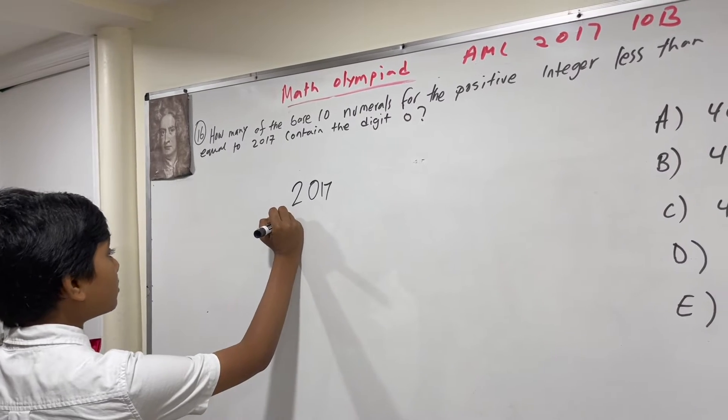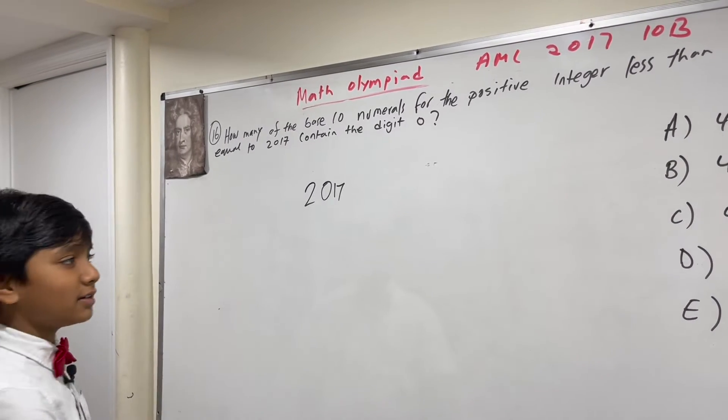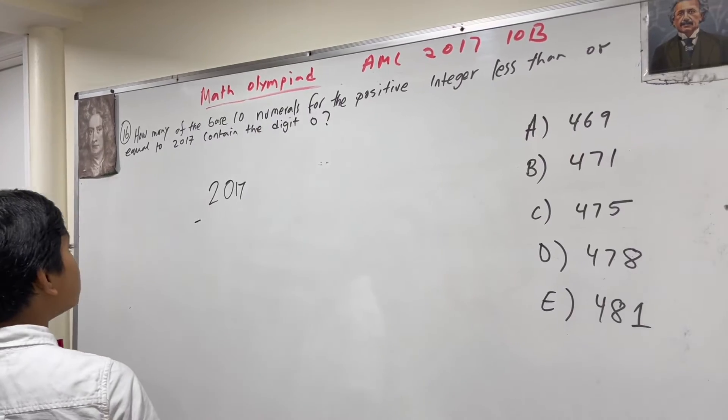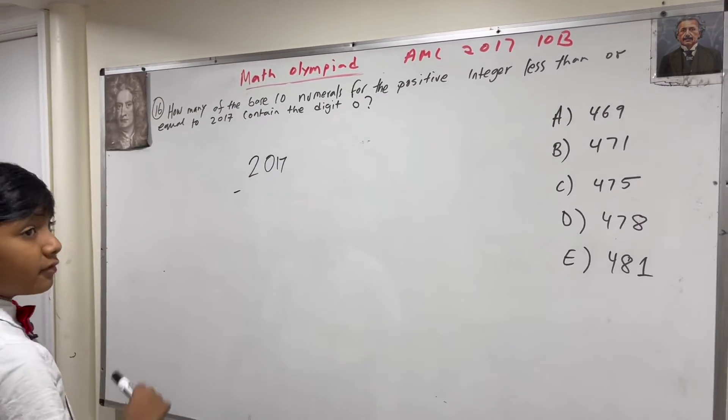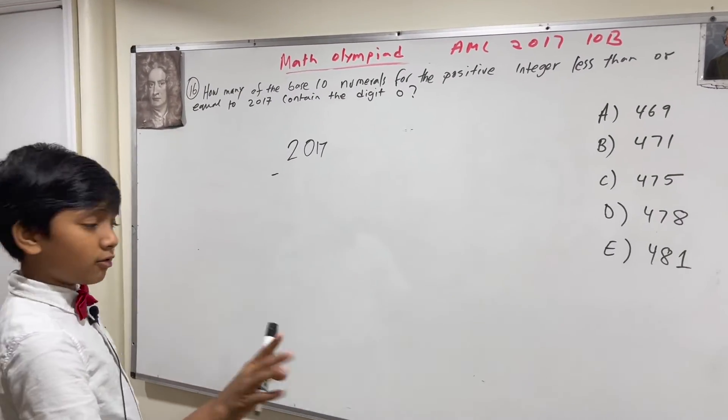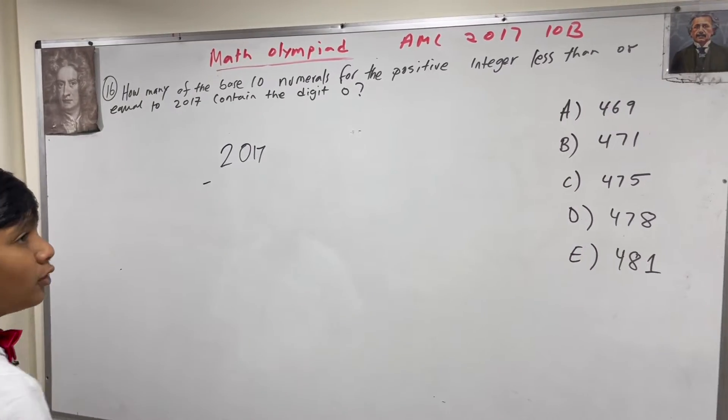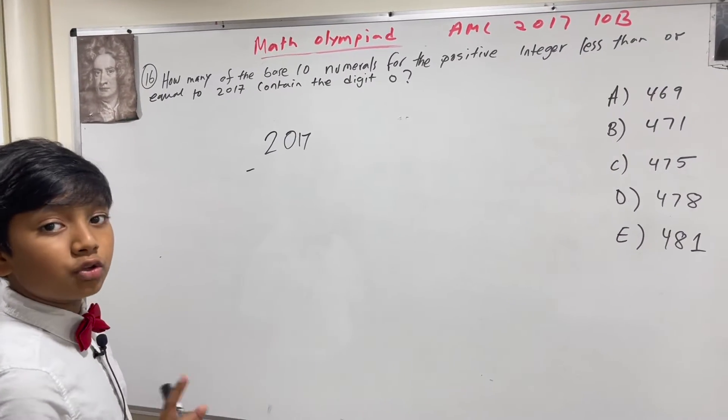So now, let's count them. What we're going to do is subtract the amount of numbers that do not have 0, and what we will get left over is the amount that do have 0.